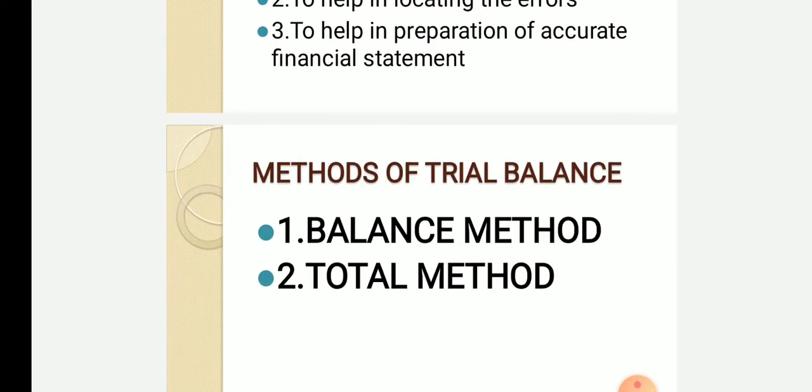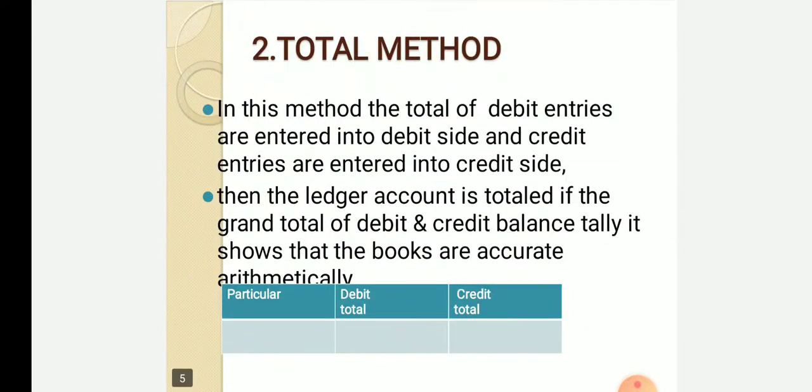There are two methods of trial balance: the balance method and the total method. In both, you have debit and credit entries. Debit entry and credit entry are totalled and balanced. That gives the balance method and total method. Both methods verify arithmetical accuracy of the accounts.